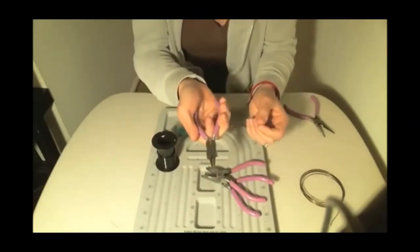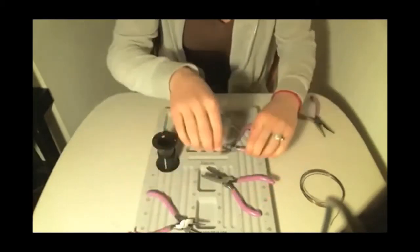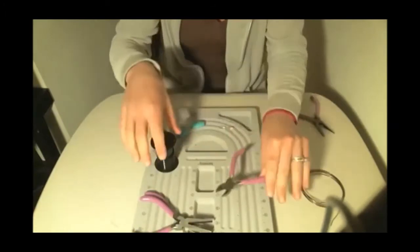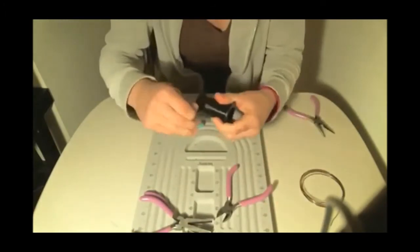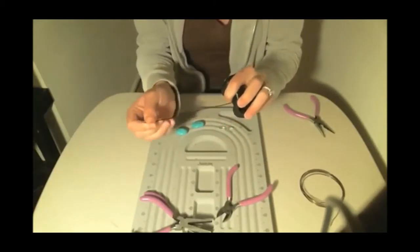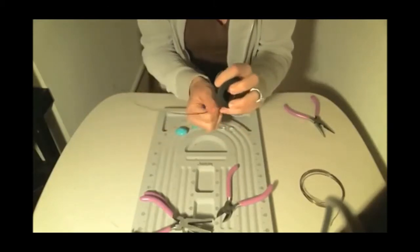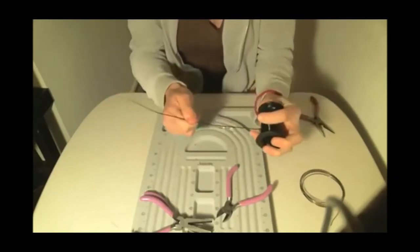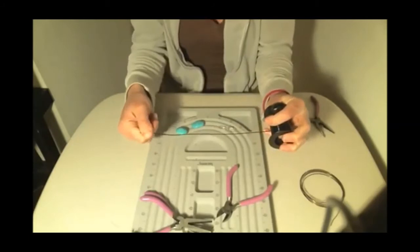We're going to need some needle nose pliers, some flat nose pliers, and some wire cutters. So first what we want to do is take some wire and get a good decent piece, because you're going to want to make a spiral with this wire, so you need some extra.